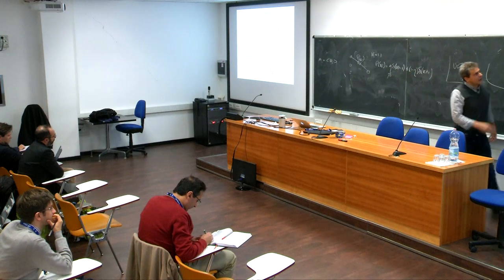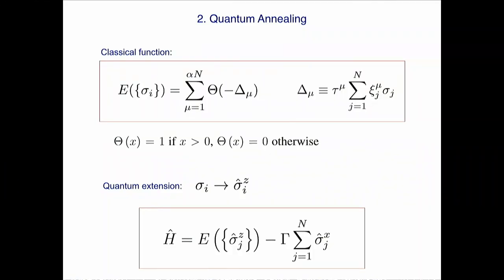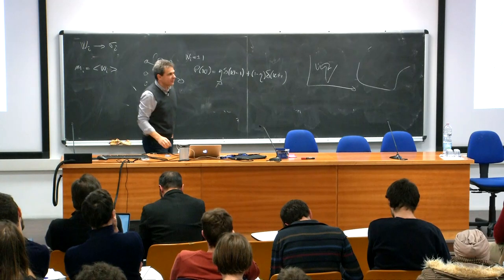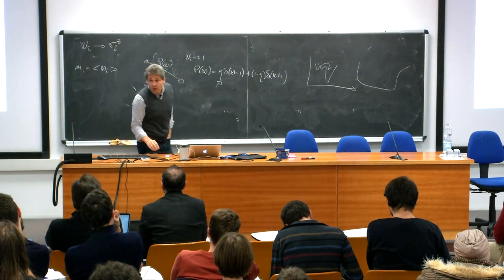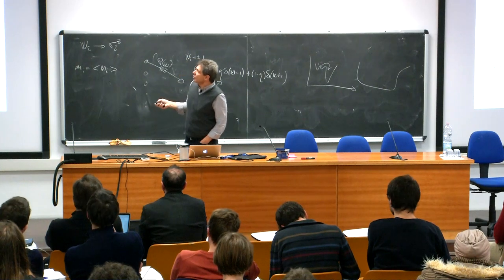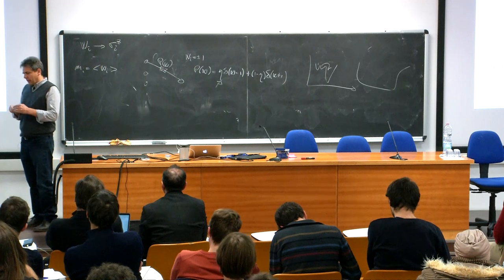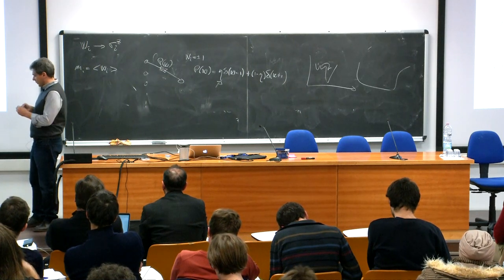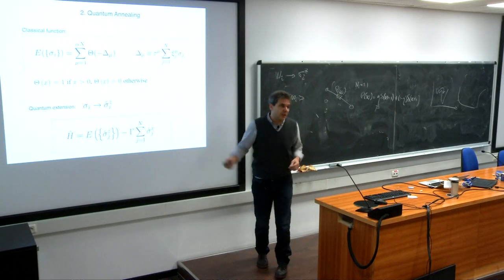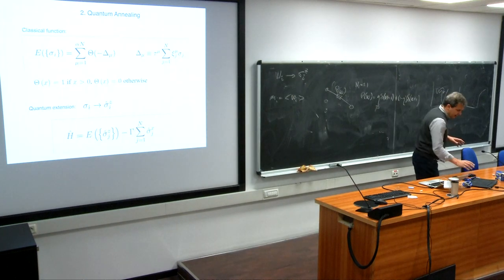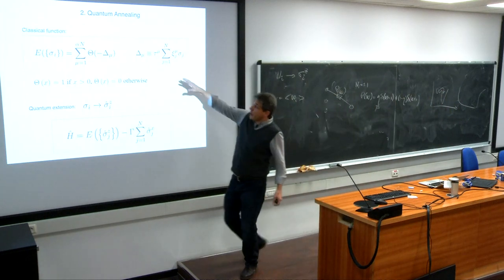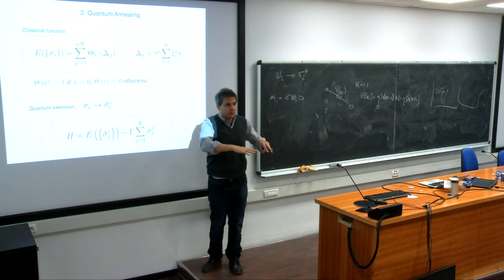For the physicists, let me mention a quantum version of this. We can imagine using the language of physics: denote the weights as sigmas — specifically sigma_z, the z-component of the Pauli matrix. We can define an energy function which is just the number of errors, the same as for the binary perceptron. We know simulated annealing on this won't work. What about quantum annealing?